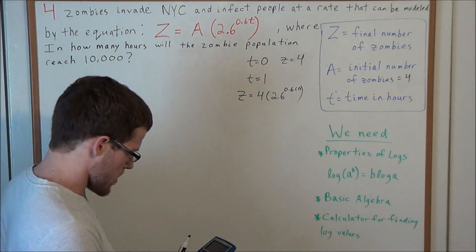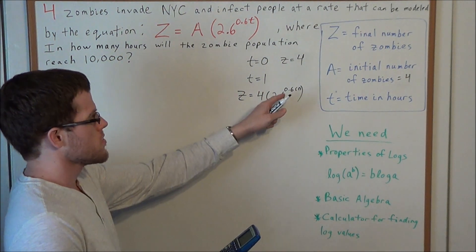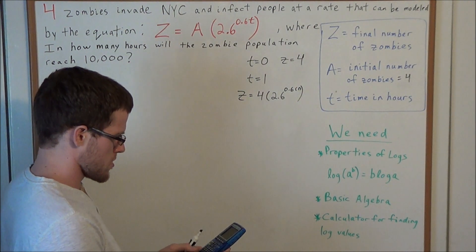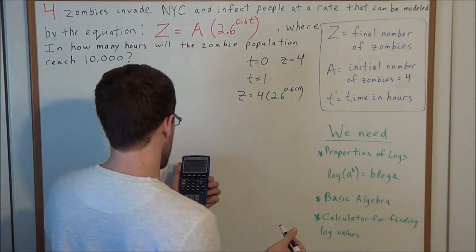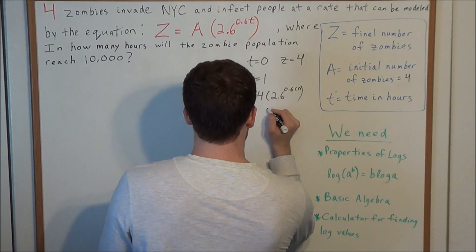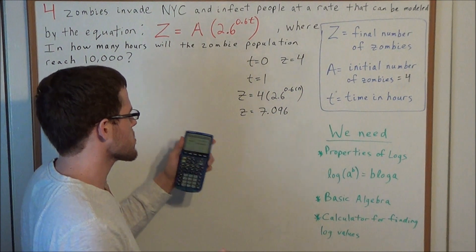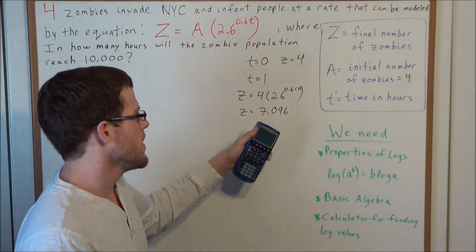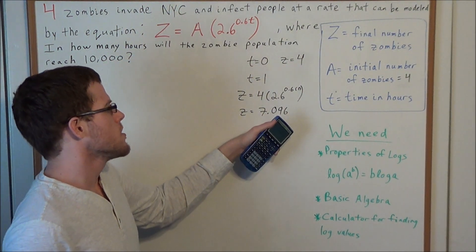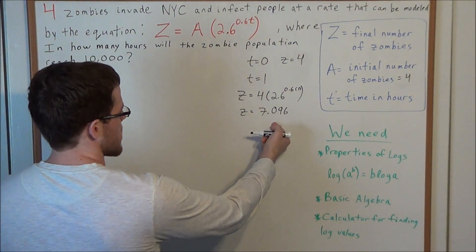For this part of the problem we'll need a calculator. We're looking at 2.6 to the 0.6 power, multiplied by four. Rounding to the nearest thousandths place, we get 7.096. In context, there are 7 full zombies after 1 hour, and the 8th person is 0.096 of the way towards becoming a full zombie — he's in the process of turning.